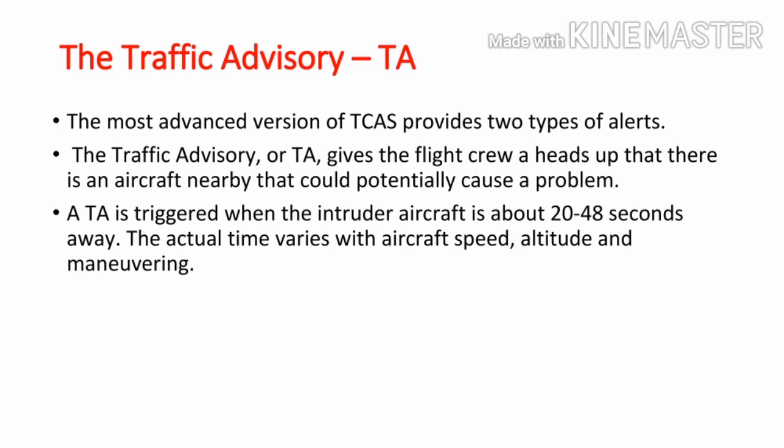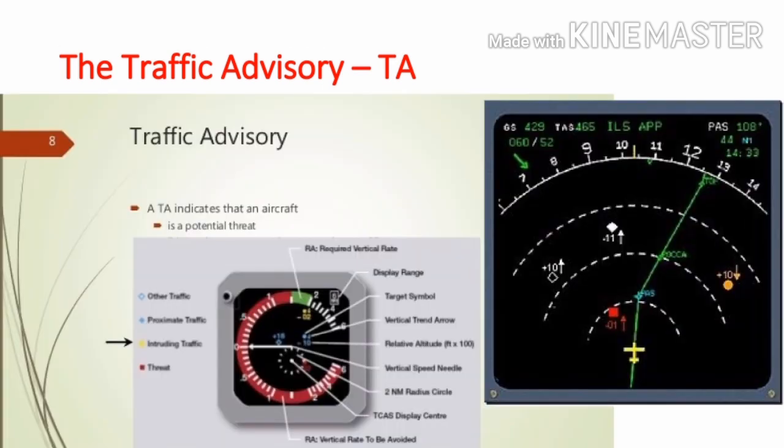The most advanced version of TCAS provides two types of alerts. The first is the traffic advisory, or TA, which gives the flight crew a heads up that there is an aircraft nearby that could potentially cause a problem. TA is triggered when the intruder aircraft is about 20 to 48 seconds away; the actual time varies with aircraft speed, altitude, and maneuvering. The intruder causing the traffic advisory is shown on the traffic display as a yellow dot, along with altitude and climb or descent information.